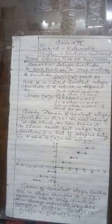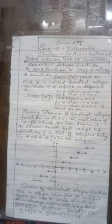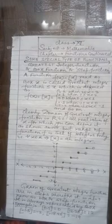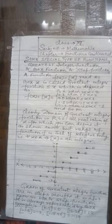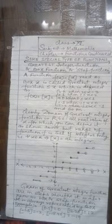A function f(x) defined as box x, read as 'box x', is called the greatest integer function — the greatest integer less than or equal to x. So f(x) = box x = 0 when x is in [0, 1), equal to 1 when x is in [1, 2), equal to 2 when x is in [2, 3), and equal to 3 when x is in [3, 4), and so on.